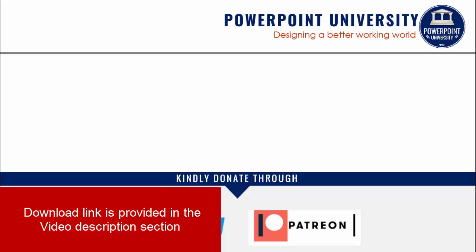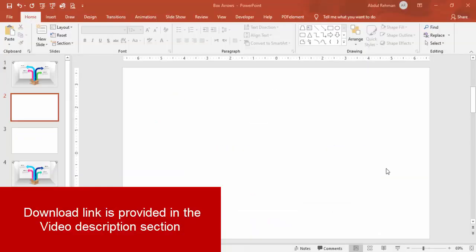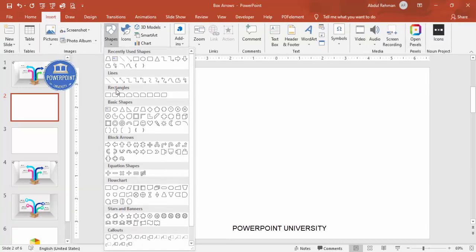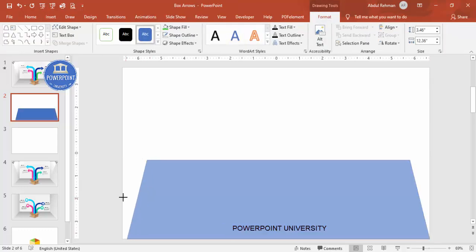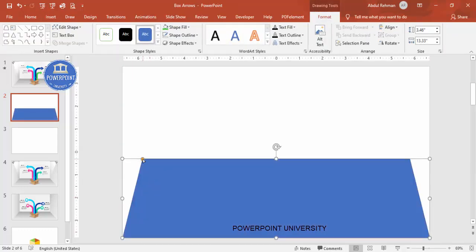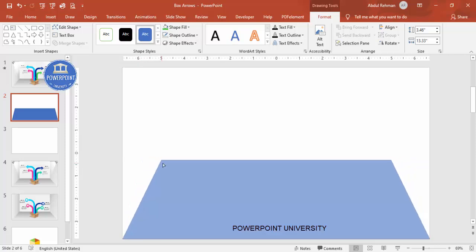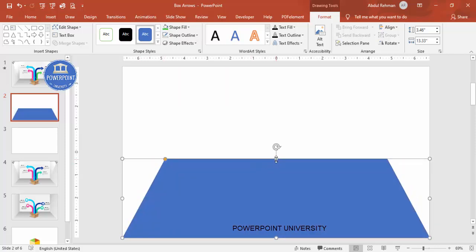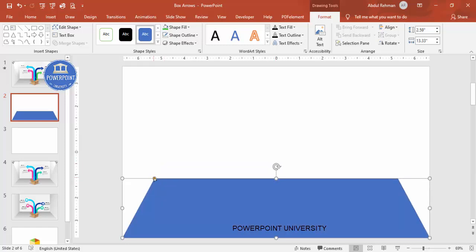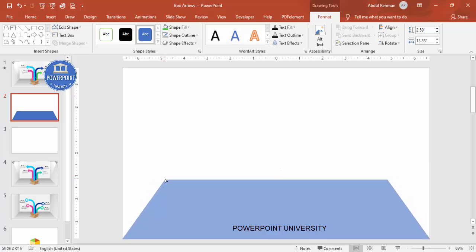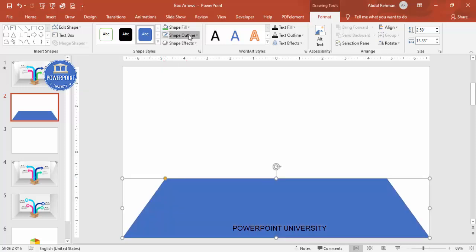Let's start the tutorial. Add a new slide and draw a 3D room. Go to Insert > Shapes, and from the Basic Shapes select the trapezoid. Draw the trapezoid, drag the small orange point inside to adjust, and set your preferred width and depth. Then set shape outline to no outline, and shape fill to a light gray color.